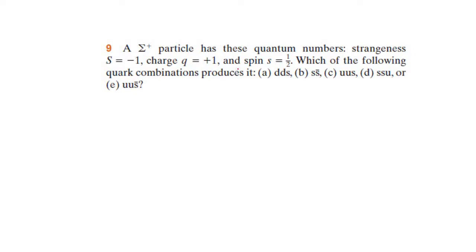Before we start answering the question we have to take the information systematically. It states that it's sigma positive, so a baryon. A baryon should consist of three quarks. You can see this answer option is not a baryon — it's a meson. Mesons have quarks and anti-quarks, so it's not the answer.